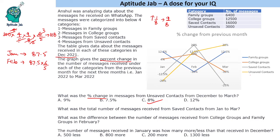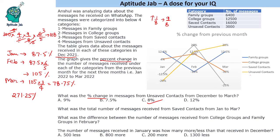In March it is 25% less, which is three-fourths of 105, giving 78.75%. Adding January, February, and March: 87.5 + 105 + 78.75 = 271.25%. This is 271.25% of 16,000.